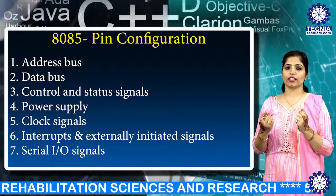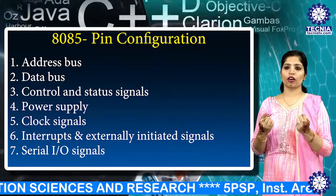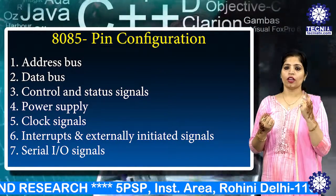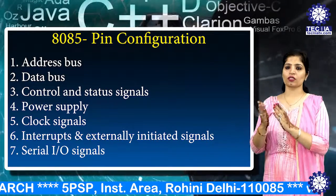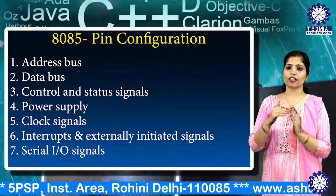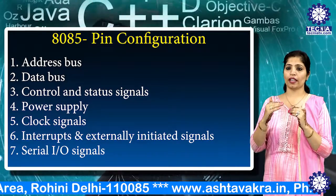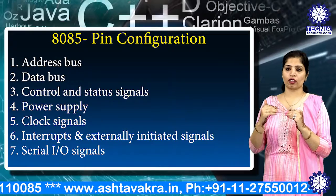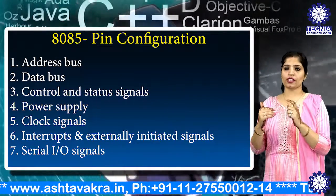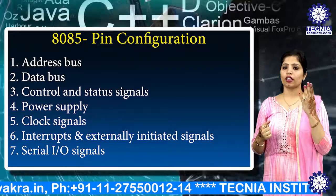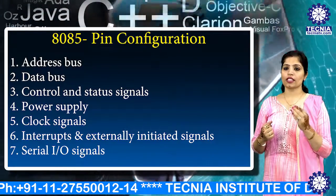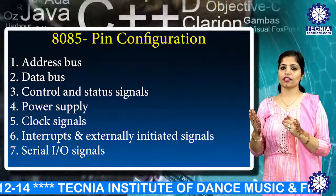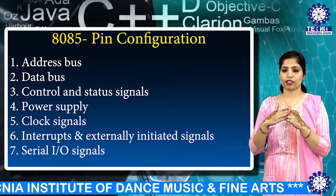The fifth configuration is the clock signal. There are three clock signals: X1, X2, and Clock Out. A crystal is connected across X1 and X2 to set the frequency of the internal clock generator; this frequency is internally divided by two. The Clock Out signal is used as the system clock for devices connected within the microprocessor.